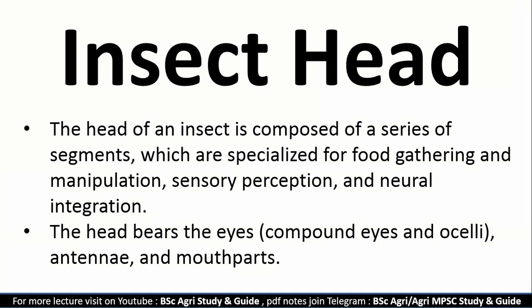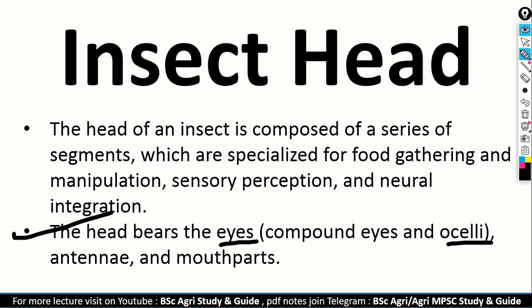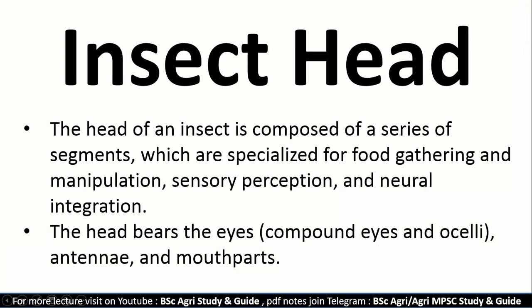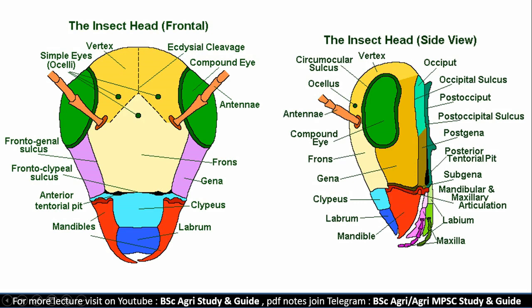The head bears the eyes — compound eyes — as well as antennae and mouth parts. The insect head has a specific shape. The compound eyes, antennae, and mouth parts are key features found on the insect head.